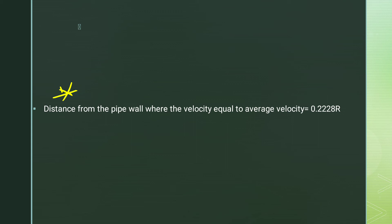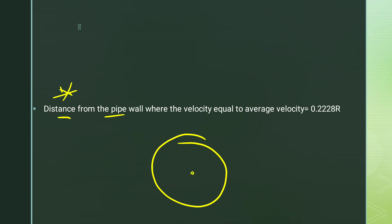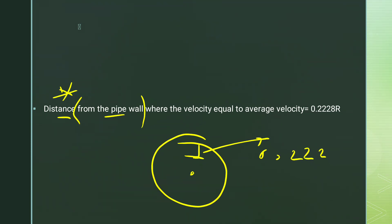Next, the distance from the pipe wall where the velocity equals the average velocity. The question is: from the pipe wall, how much distance corresponds to the average velocity? In the case of turbulent flow in pipes, the answer is 0.228 times R, where R is the pipe radius.